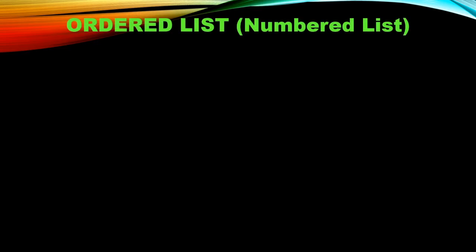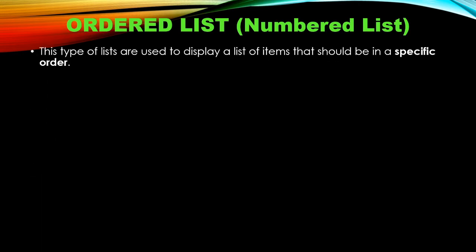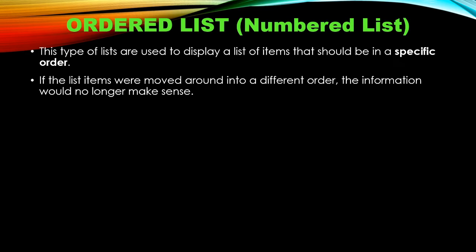The first one is the ordered list, which we can also call the numbered list. This numbered list is used to display items that must be placed in a specific order. If we change the order of list items, then the meaning of the document will be changed. So it is necessary to display these list items in a specific order, and for that we use the ordered list or numbered list.